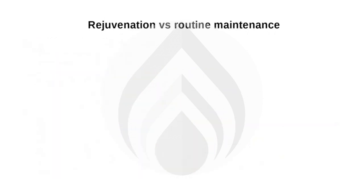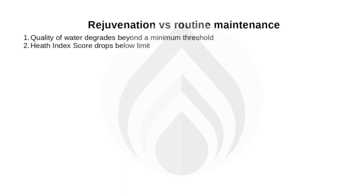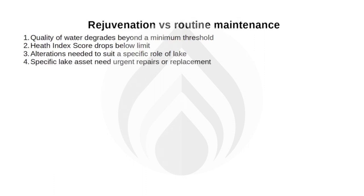Let us consider when we need to call for a rejuvenation instead of relying on routine maintenance. There are four cases in which rejuvenation is called for: first, the quality of lake water degrades beyond a minimum threshold; second, the health index score of the lake drops below limit; third, alterations are needed in the lake to fulfill a specific role, typically when the lake is assigned a new role; and fourth, specific lake assets need urgent repairs or replacement.